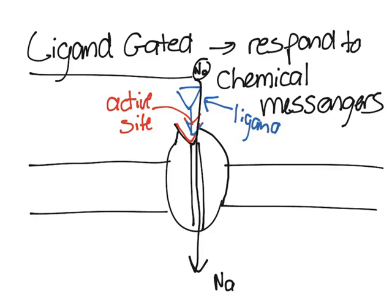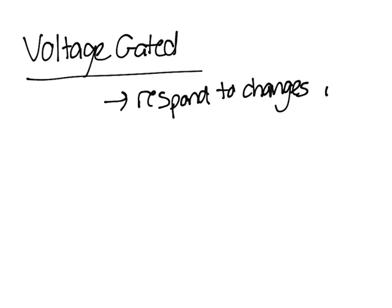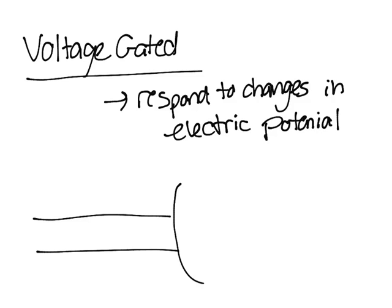Let's continue with voltage gated. Voltage gated channels respond to changes in electric potential. What that means is, let's say we have this ion channel right here.